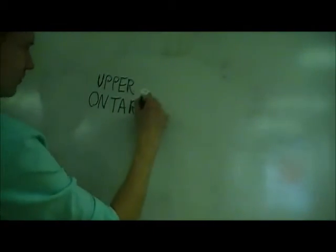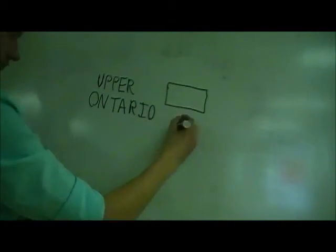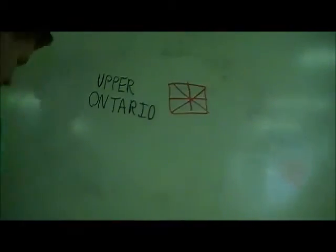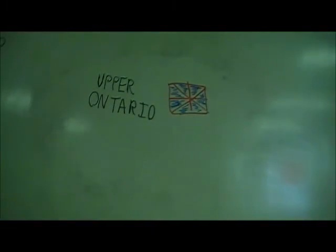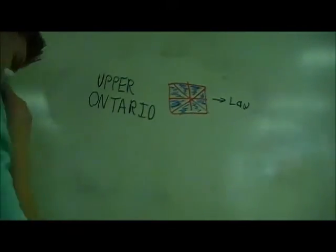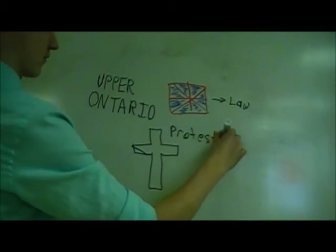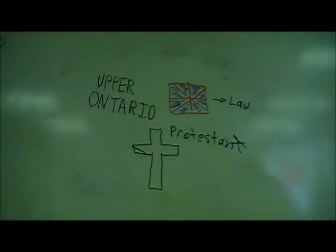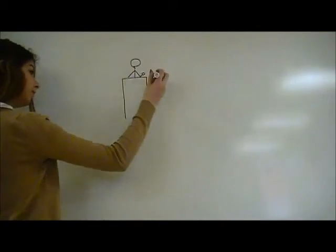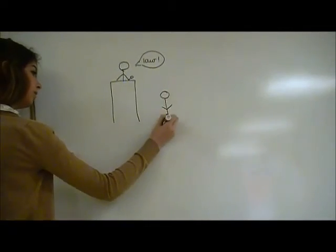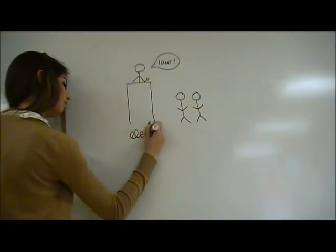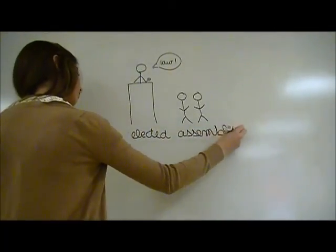Upper Canada was English-speaking Protestant and ruled by the British and is now known as Ontario. The Constitutional Act gave both colonies their own governors, each consisting of an elected assembly.